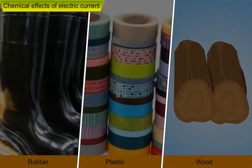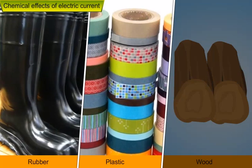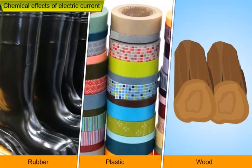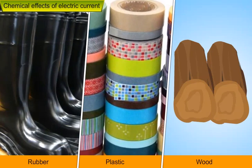Whereas, materials like rubber, plastic and wood do not conduct electricity and are called poor conductors of electricity.